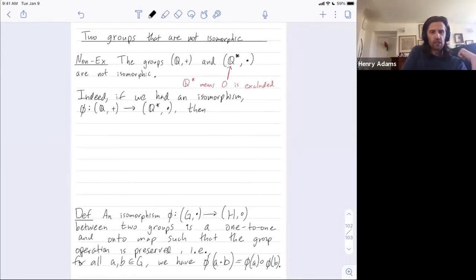Then certainly we'd have to map some input rational number to negative one. Just because this is a one-to-one and onto map. So for some input rational, we'd have phi of that input is equal to negative one. To be an onto map for any possible rational besides zero, such as negative one, we're going to have to find some input rational, call it little q, such that our map takes this little q to negative one.